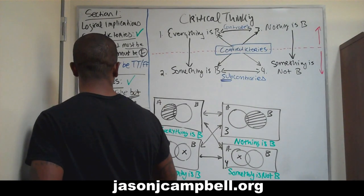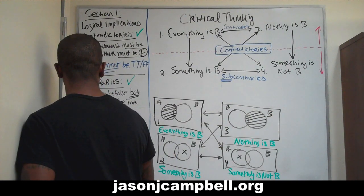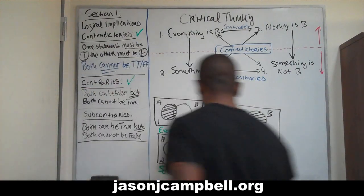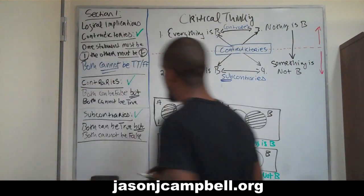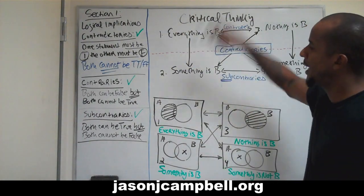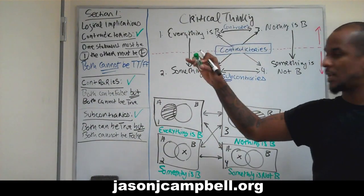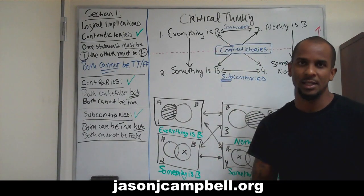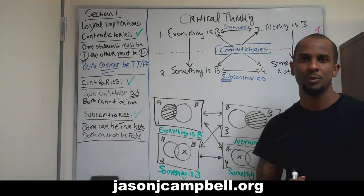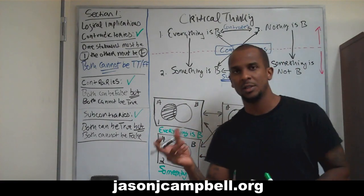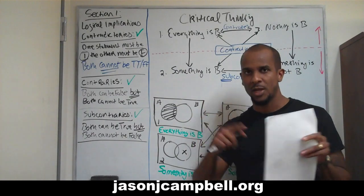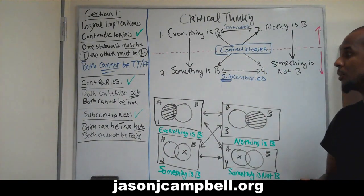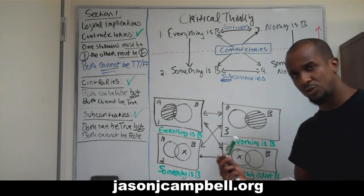Both can be true, but both cannot be false. So that should be relatively easy — not a problem. So we've done contradictories diagonally, contraries top horizontal, and now we just completed subcontraries bottom horizontal. To summarize: for contradictories, one or the other has to be true or false — both can't be true, both can't be false. For contraries, both can be false but both cannot be true. Subcontraries, just the opposite — both can be true, both cannot be false.